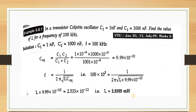Problem: In a transistor Colpitts oscillator, C1 = 1 nF and C2 = 100 nF. Find the value of L for a frequency of 100 kHz. Calculate C_eq = C1·C2/(C1+C2), then use F = 1/(2π√(L·C_eq)) to solve for L. Substituting gives L = 2.5355 mH.